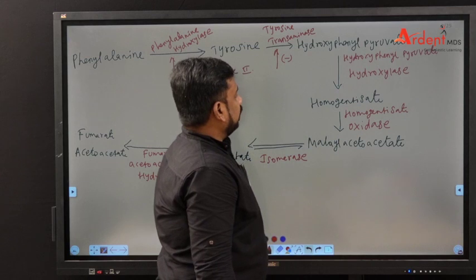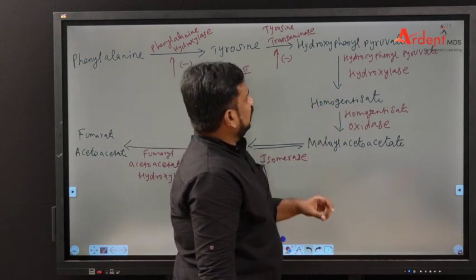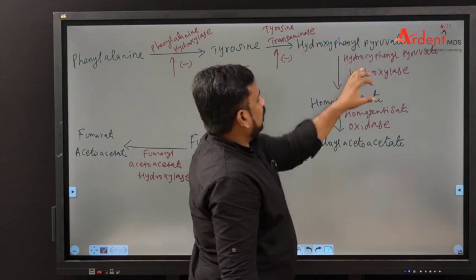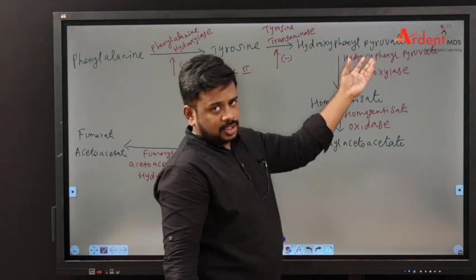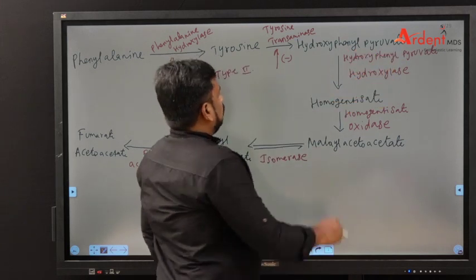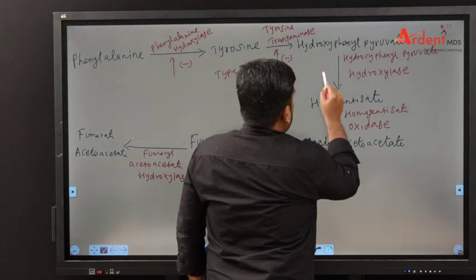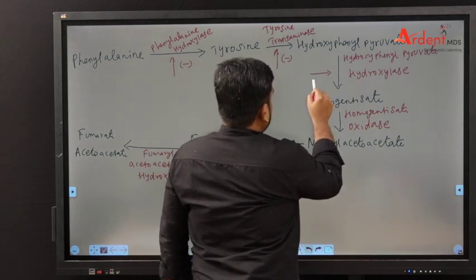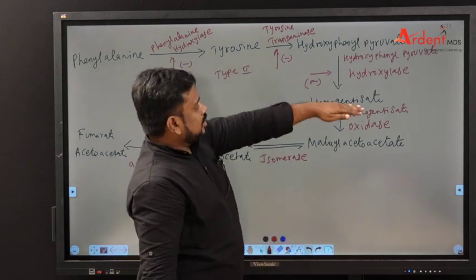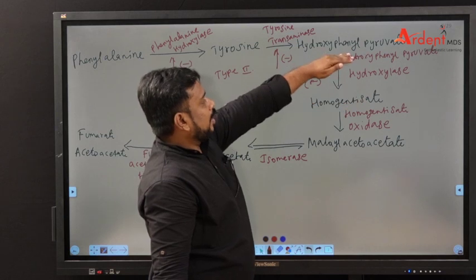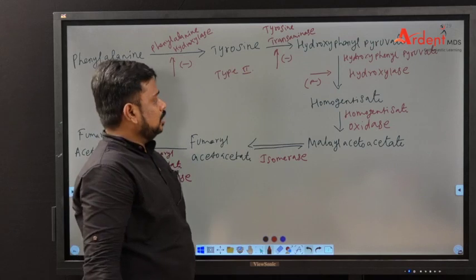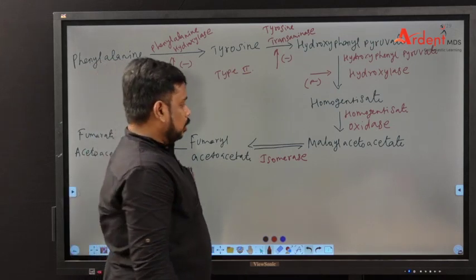Hydroxyphenylpyruvate is converted into homogentisate by the enzyme hydroxyphenylpyruvate hydroxylase. A defect in this enzyme leads to decreased synthesis of homogentisate and more accumulation of hydroxyphenylpyruvate, which leads to accumulation of tyrosine — this is called neonatal tyrosinemia.